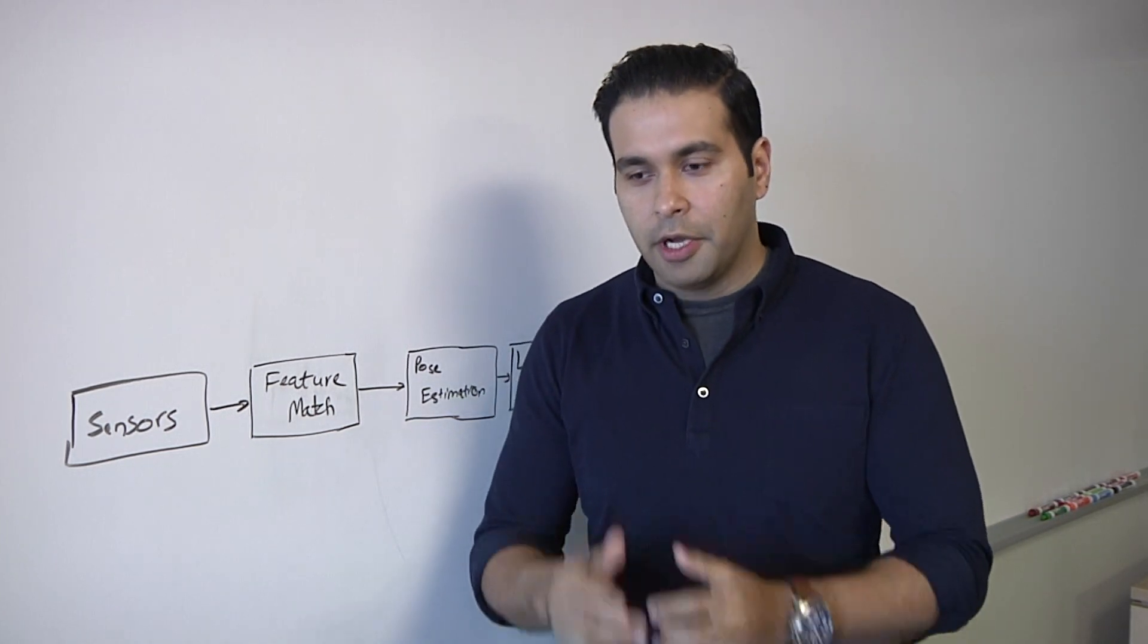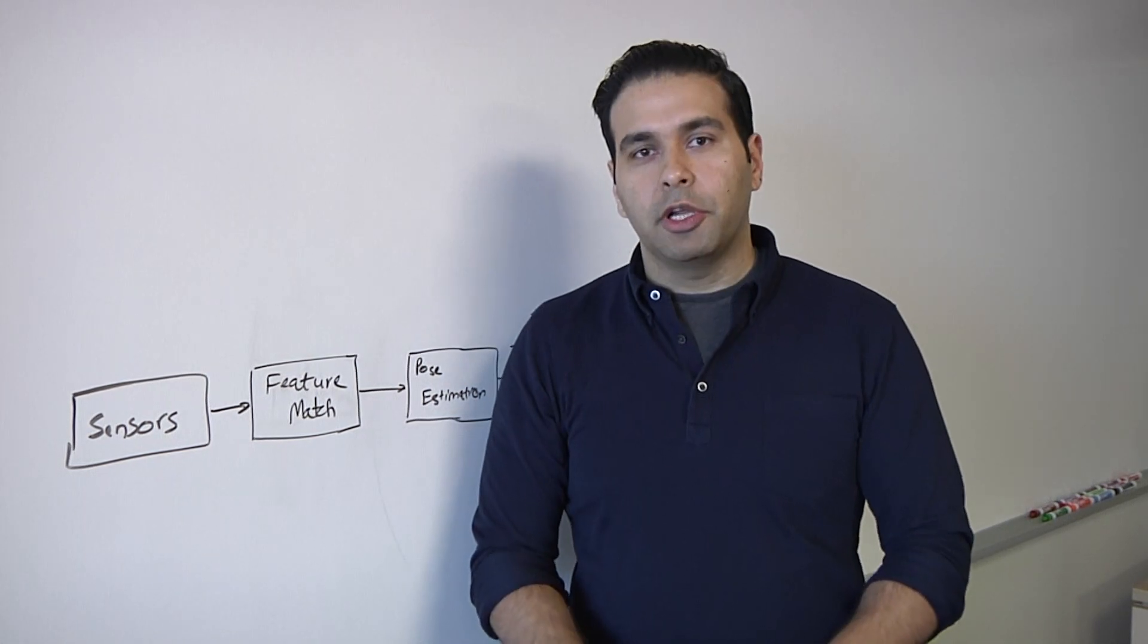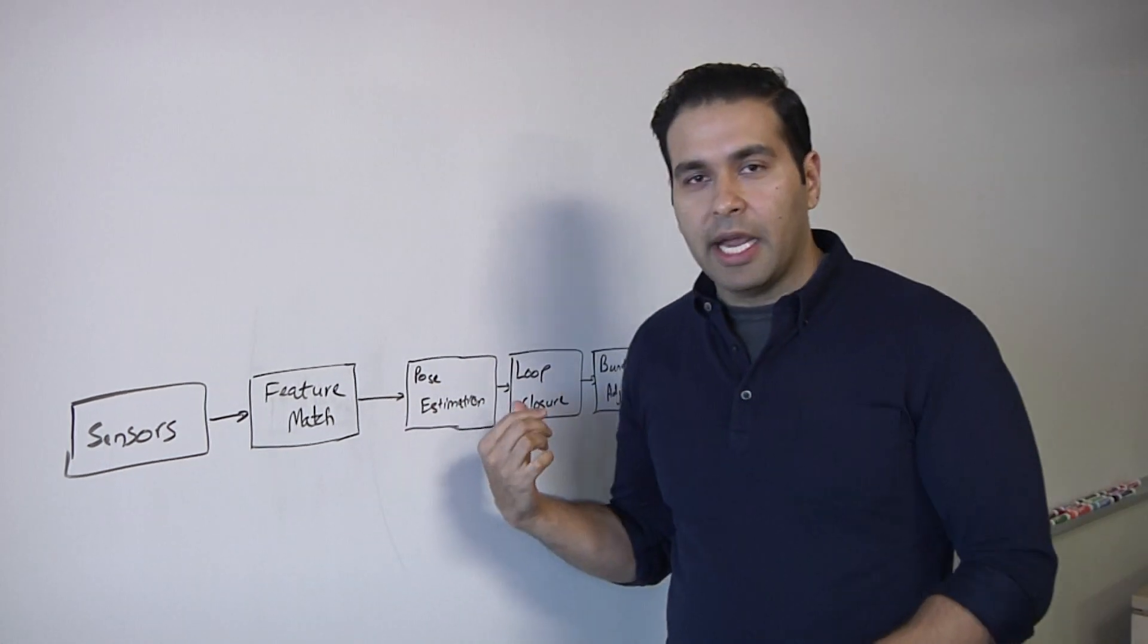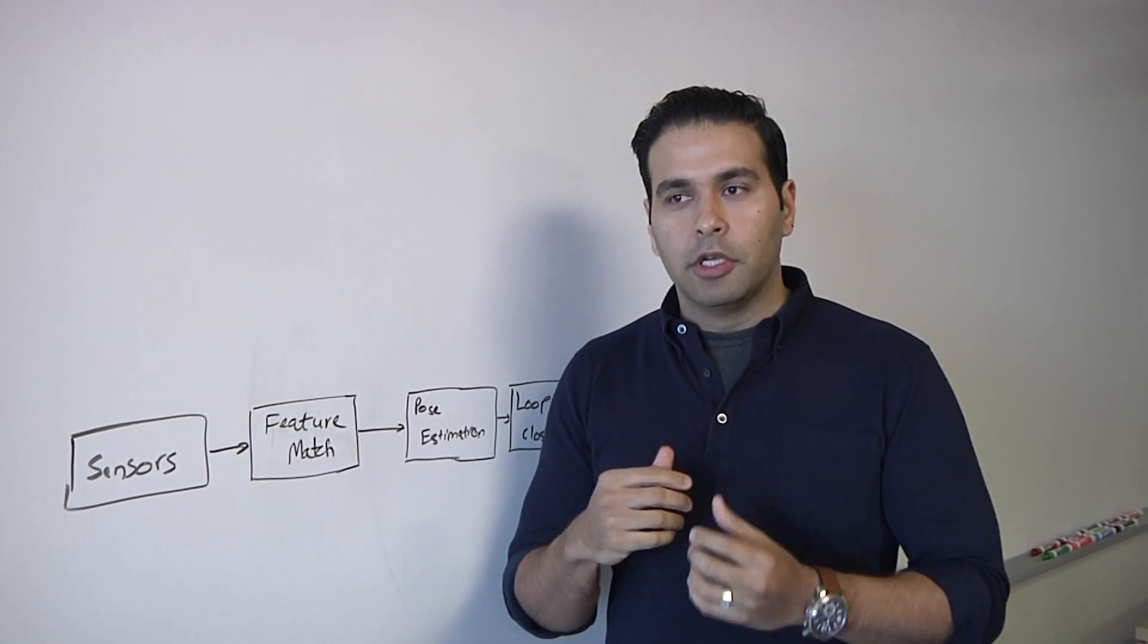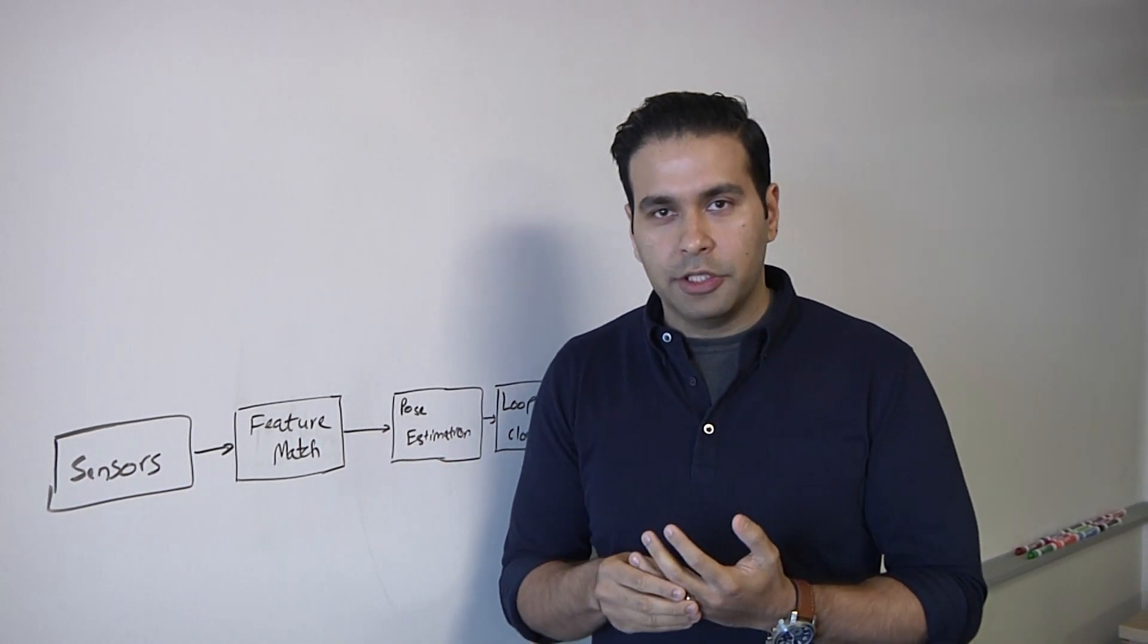So, a simple example is, let's say I'm in this room over here. If I walk around this room and I come back to this particular point, loop closure would help me identify or establish that, hey, I have been over here before.